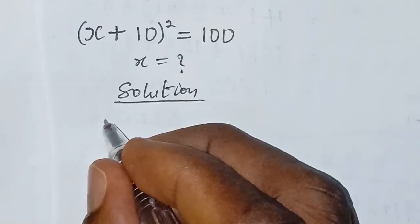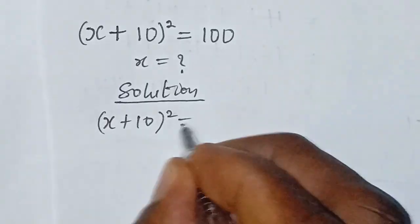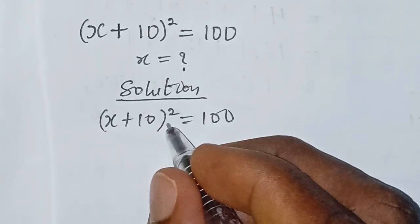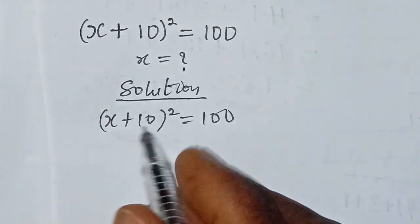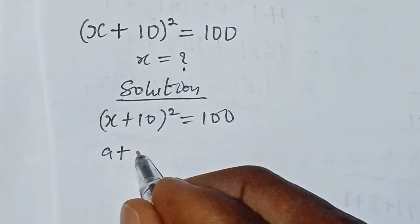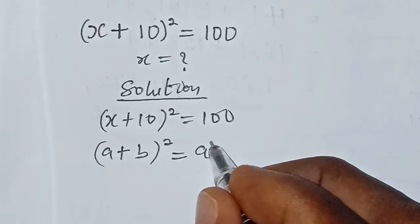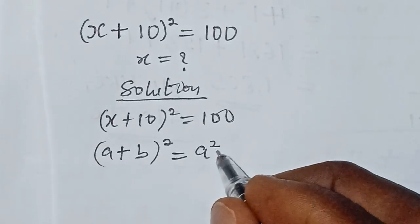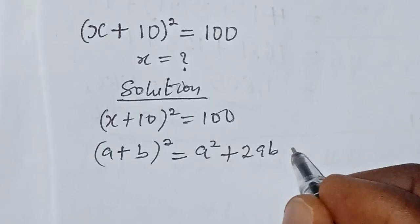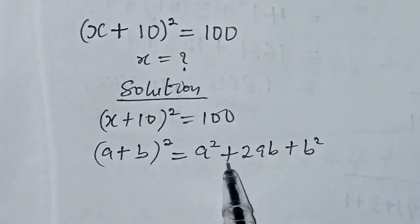The first method we are going to use: let's have our question. Our first method is to approach this question by using the algebraic identity (a + b)² equals the expansion of a² + 2ab + b².